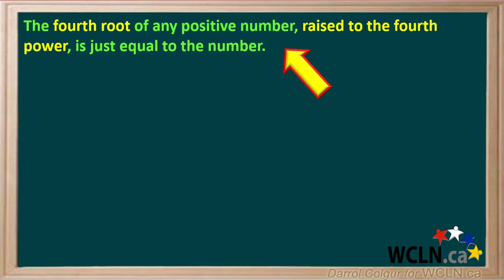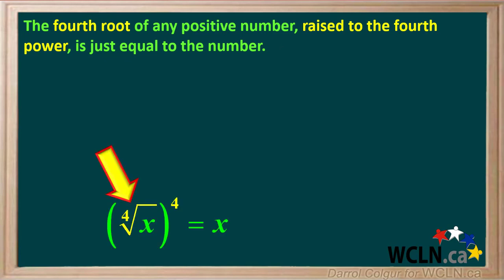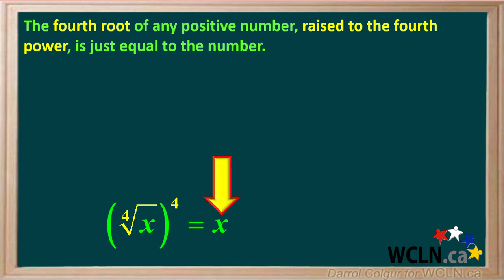At this point, you can probably guess that the fourth root of any positive number, raised to the fourth power, is just equal to the number. Like a square root, we cannot take the fourth root of a negative number, so we specify a positive number here. This equation shows that the fourth root of x, to the fourth power, is just equal to x.